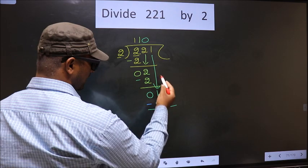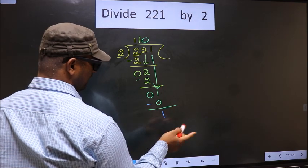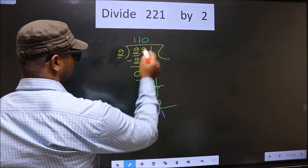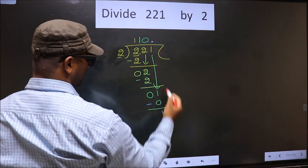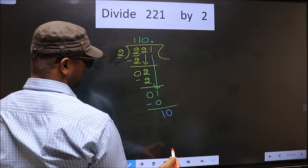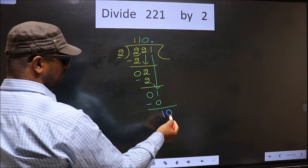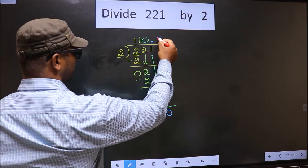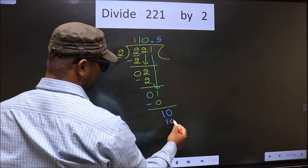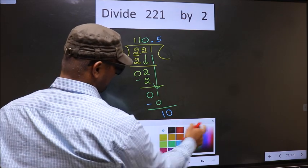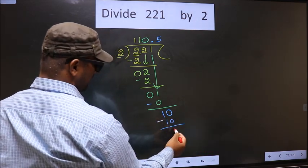Over here we did not bring any number down, and 1 is smaller than 2. So now you can put a dot and take 0 here. Now 10. When do we get 10 in 2 table? 2 times 5 is 10. Now you subtract 10 minus 10, 0.